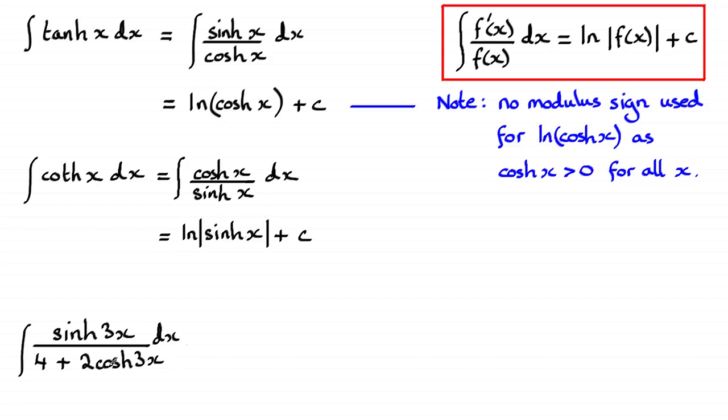That's because when you differentiate cosh 3x, you would end up with 3 sinh 3x, times it with the two there, you get 6 sinh 3x.